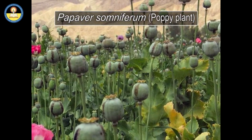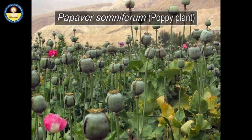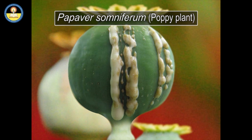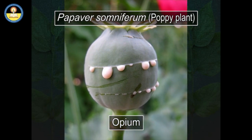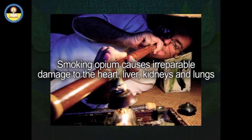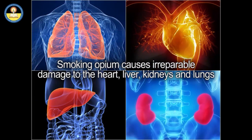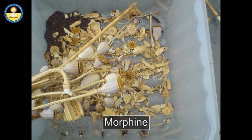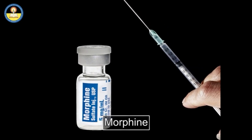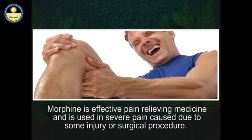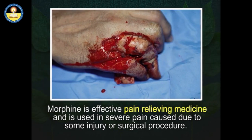The seed pods of Papaver somniferum, commonly known as the poppy plant, secrete pale yellow latex when cut open. Dried latex from the poppy is used as a drug by the name opium. Opium is a highly addictive drug that causes several bad effects on the brain; smoking opium causes irreparable damage to the heart, liver, kidneys, and lungs. Morphine is a type of drug extracted by heating opium, and it has several medicinal uses — it is the most effective pain-relieving medicine, used in severe pain caused by injury or surgical procedures.